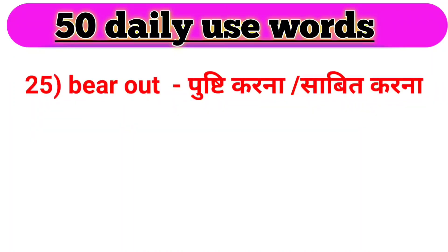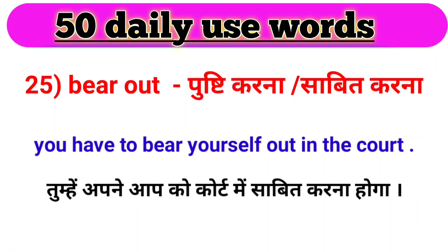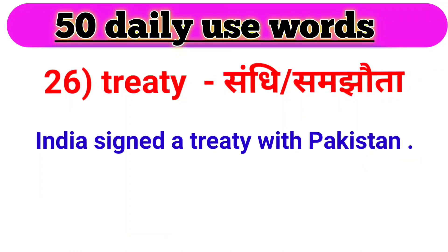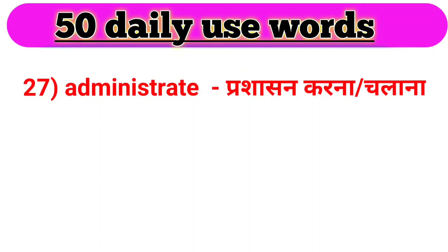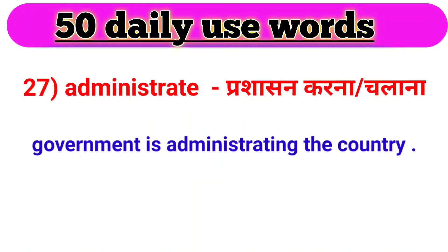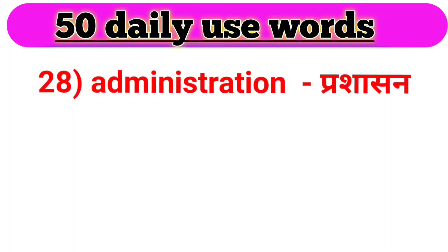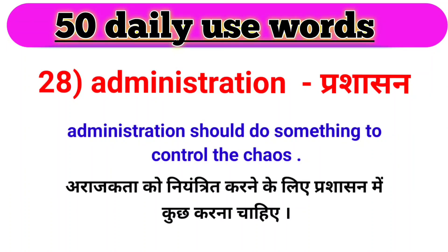Agla hamaara ek phrasal verb hai — bear out. Bear out ka matlab hota hai pusti karna ya sabit karna. For example: You have to bear yourself out in the court. Tumhe apne aap ko court mein sabit karna hoga. Next, we have treaty. Treaty ka matlab hota hai sandhi ya samjhauta. For example: India signed a treaty with Pakistan. Bharat ne Pakistan ke saath ek sandhi par hastakshar kiye. Next word, we have administrate. Administrate ka matlab hota hai prasaasan karna ya chalana. For example: Government is administrating the country. Sarkar desh ka prasaasan kar rahi hai. Administration ka matlab hota hai prasaasan. Administration should do something to control the chaos.